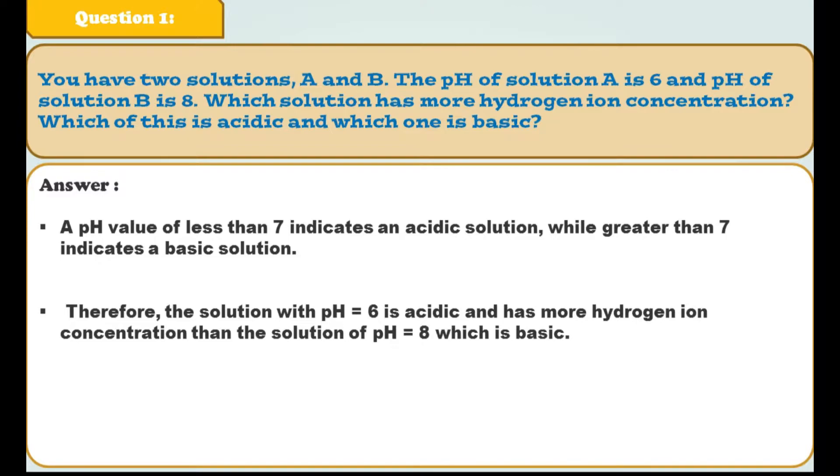it means that it has pH less than 7, which implies that solution A is acidic and solution B has pH of 8. It means that solution is having pH more than 7. This implies that solution B is basic. So as I already taught you in my previous video lecture that if we move from 7 to 0, the concentration of H+ will increase. And as we move from 7 to 14, the concentration of OH- will increase and H+ will decrease. So the solution having pH 6 which is acidic has more concentration of hydrogen ion than the solution of pH 8 which is base.